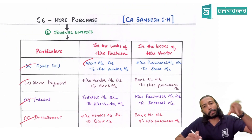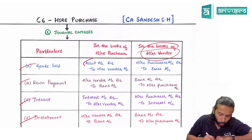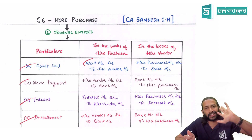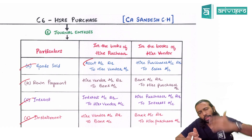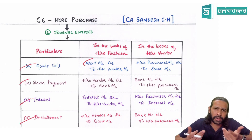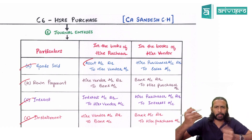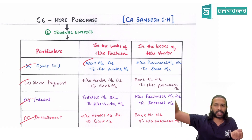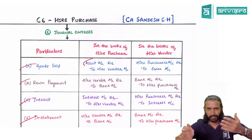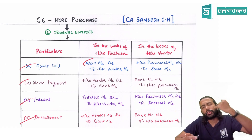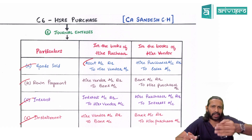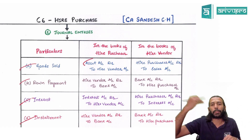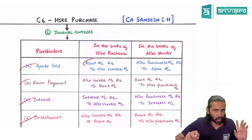Now, in the books of the hire vendor, for a hire vendor, he is dealing with goods — not a fixed asset. So normal goods sold: the journal entry is Debtors Account debit to Sales, because the hire vendor is not receiving the money right now; he is recovering it in installments — it is a credit sale. Instead of saying Debtors, we say Higher Purchaser Account debit to Sales — or Higher Purchaser Account debit to Higher Purchase Sales.